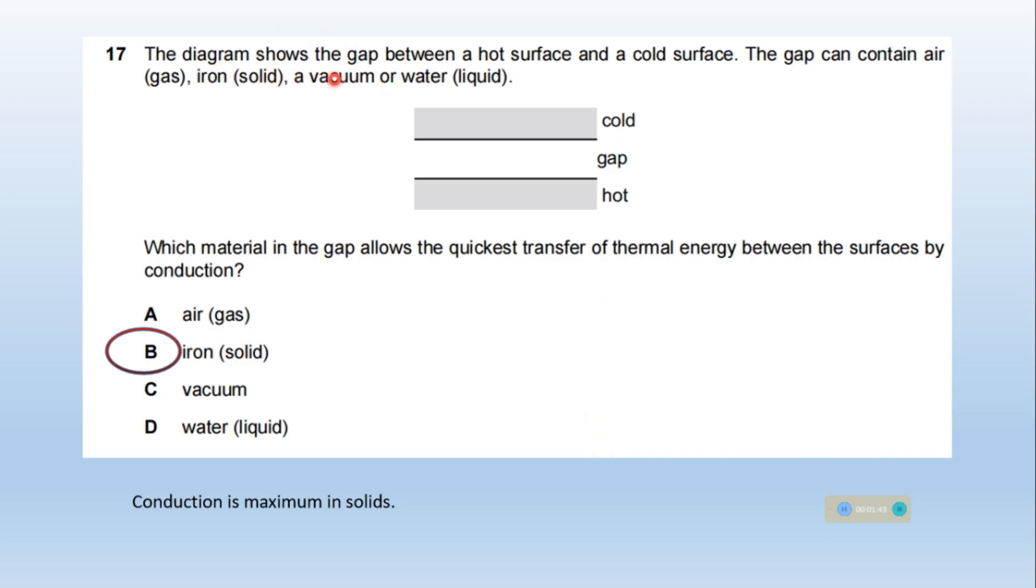The diagram shows the gap between a hot surface and a cold surface. This is the gap. The gap can contain air, gas, iron, solid or a vacuum or water, liquid. Which material in the gap allows the quickest transfer of thermal energy between the surfaces by conduction? So definitely iron is the right answer because conduction is maximum in solids.